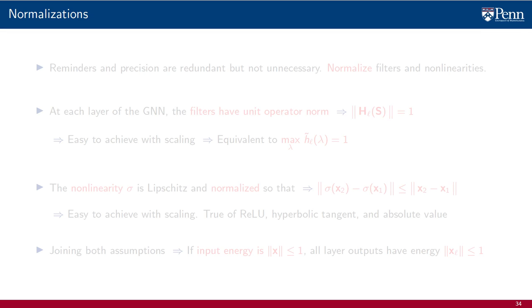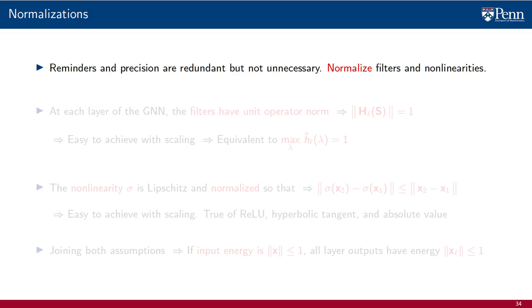It would not be unreasonable to cut our discussion here. You could go check the proof of GNN stability to graph dilations, confirm that there is nothing in the proof that is specific to dilations, and write theorems for the stability of GNNs to general additive and relative deformations. That said, reminders and precision may sometimes be redundant, but they are never unnecessary. Let us therefore go through the motions together.